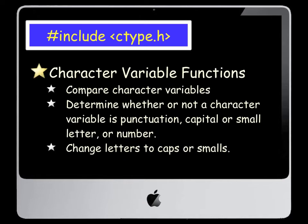We also have a library called ctype.h. When you learn more about variables, you'll learn that character variables are pretty special. We can determine whether or not a character variable is punctuation, a capital or small letter, or a number. We can also do things like changing letters to caps or smalls. It's very useful when we start sorting and comparing information that's in text form.